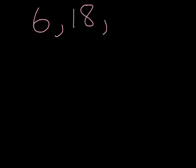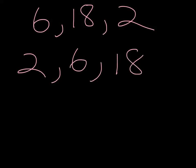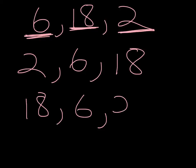The answers for 6, 18, and 2: the least to greatest order would be 2, 6, and 18, because 2 is the lowest number, 6 is the second lowest, and 18 is the highest and third lowest. And then the greatest to least would be 18, 6, and 2, because 18 is the highest, 6 is the second highest, and 2 is the lowest and third highest number.